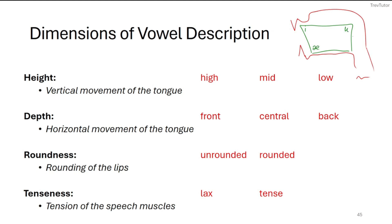We can talk about height — how high your tongue is: either high, mid, or low. We can talk about depth — whether it's front, central, or back. We can also talk about the roundedness of your lips, which is important as well. If the lips are rounded or just spread, spread lips are called unrounded.